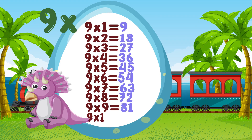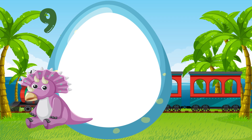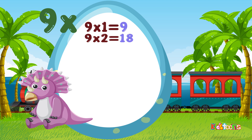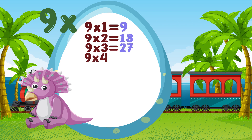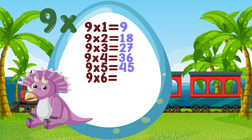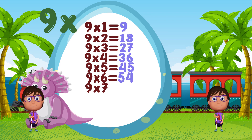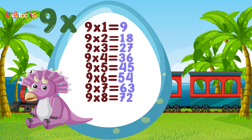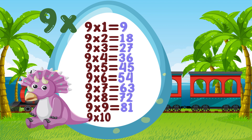Let's repeat it again. 9 times 6 is equal to 54. 9 times 7 is equal to 63. 9 times 8 is equal to 72. 9 times 9 is equal to 81. 9 times 10 is equal to 90.